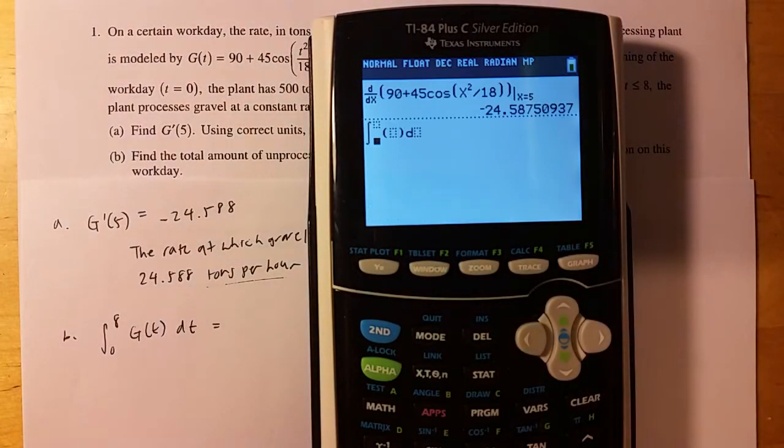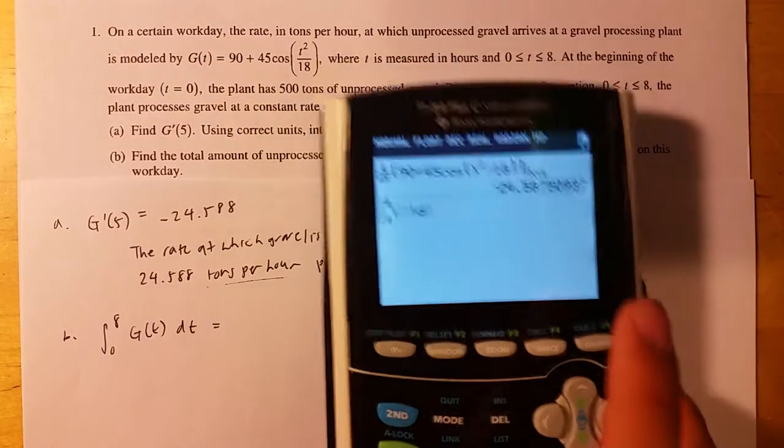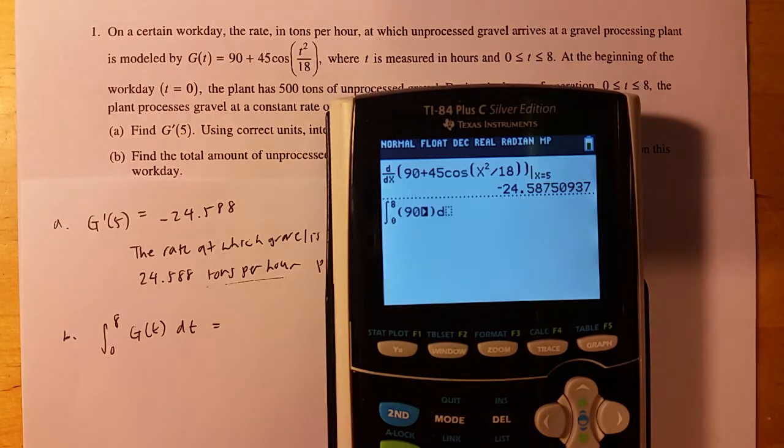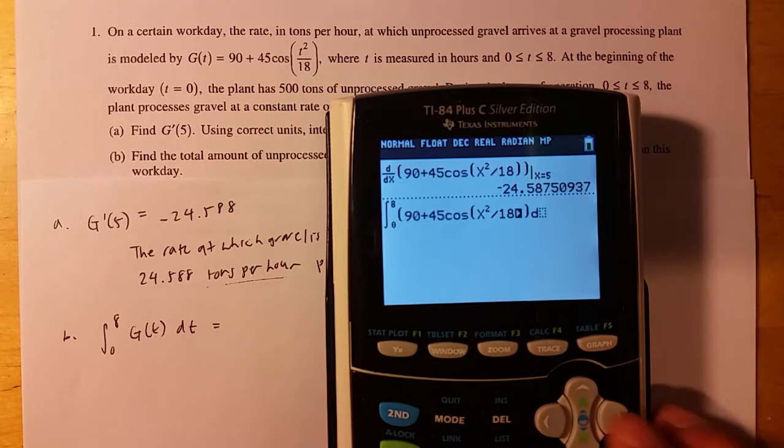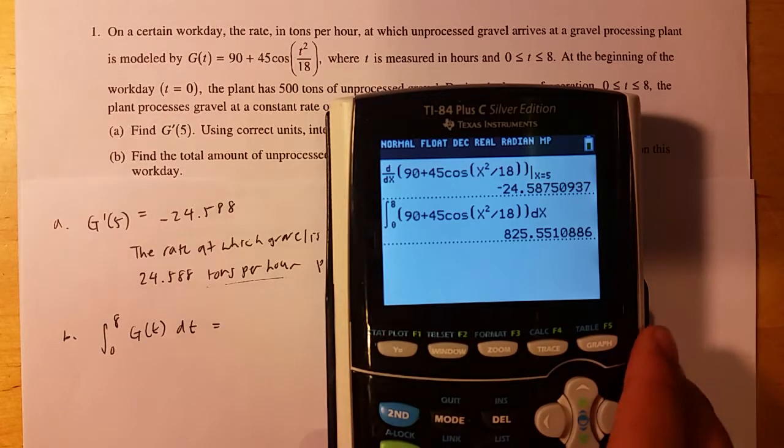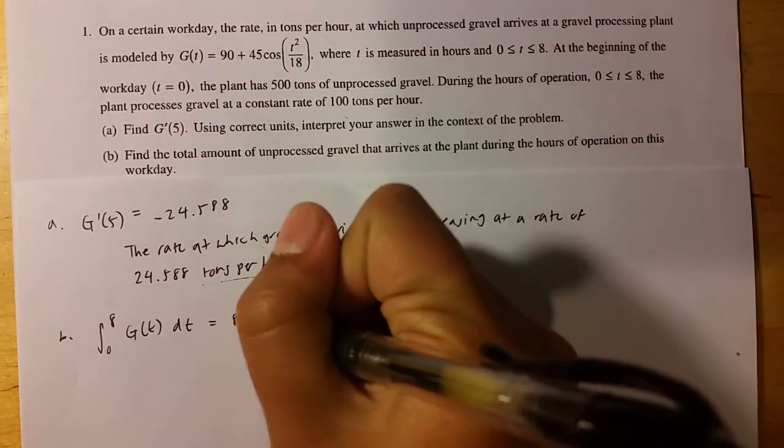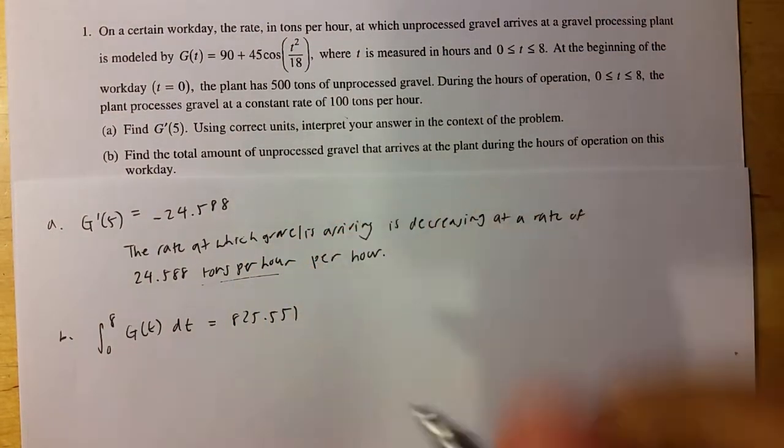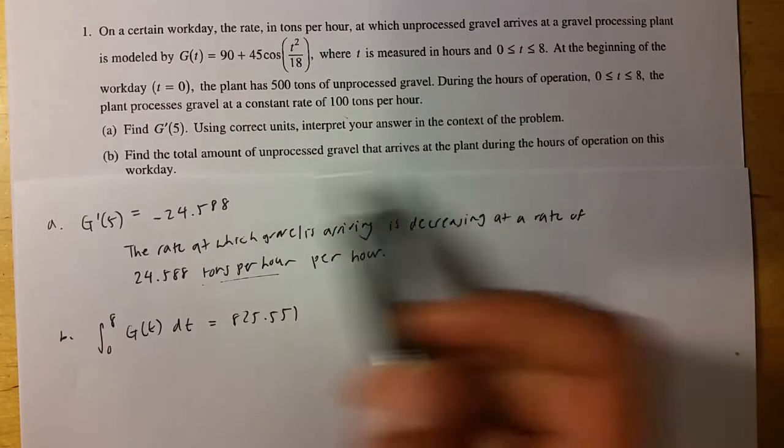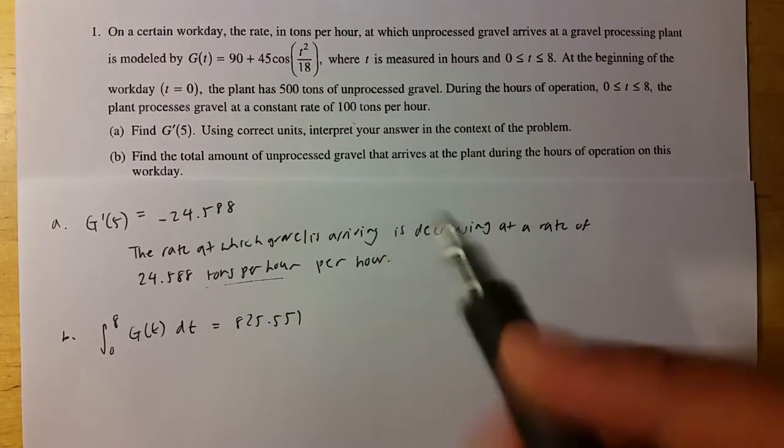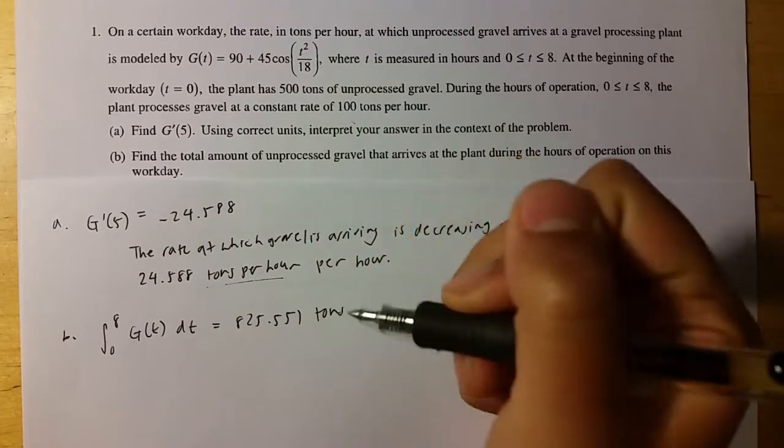And then again, use your handy graphing calculator to do integral. Math 9 from 0 to 8. And then g of t. Again, 90 plus 45 cosine of t squared over 18 dt. And you get 825.551. And because it's just asking for the amount of gravel, then you know that your units are just tons.